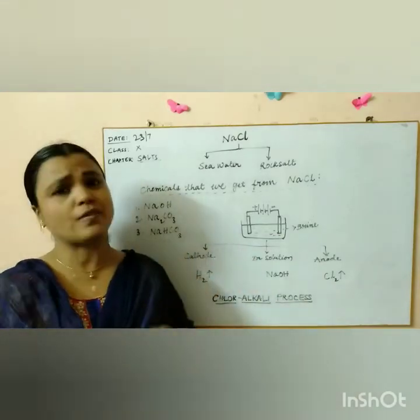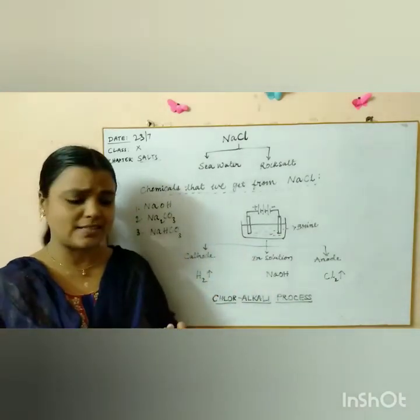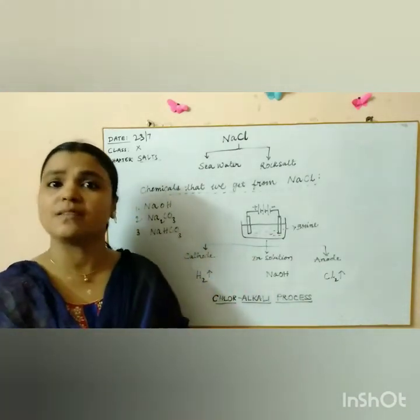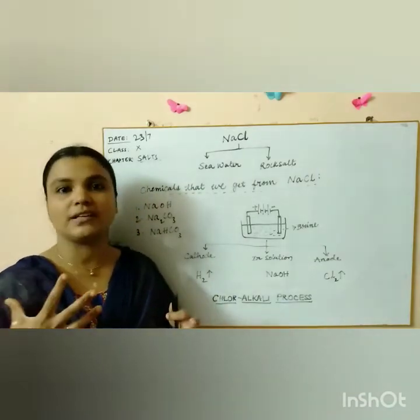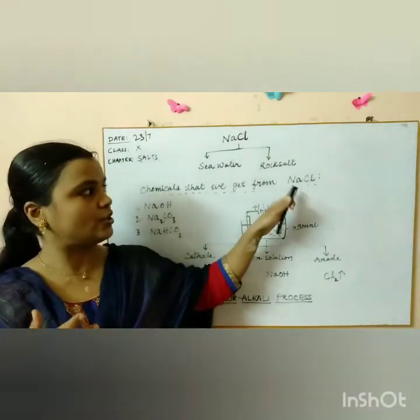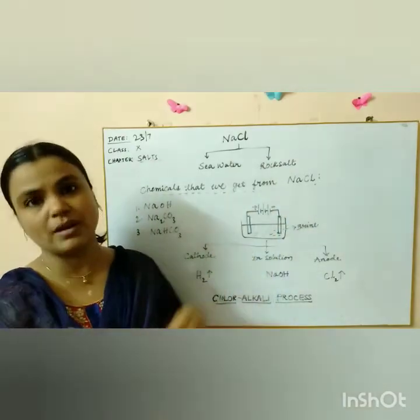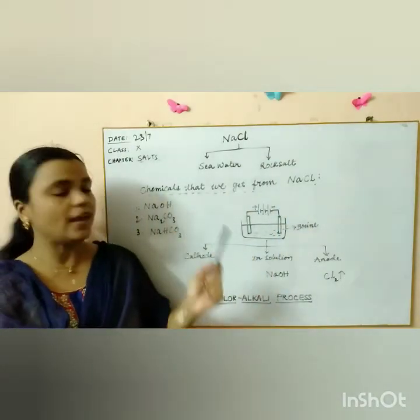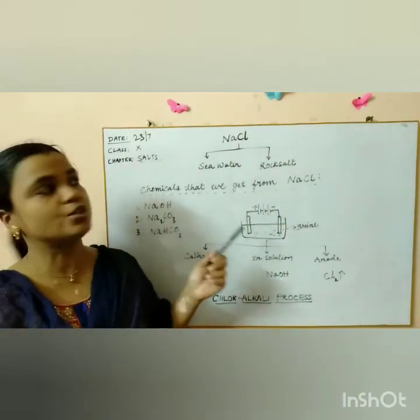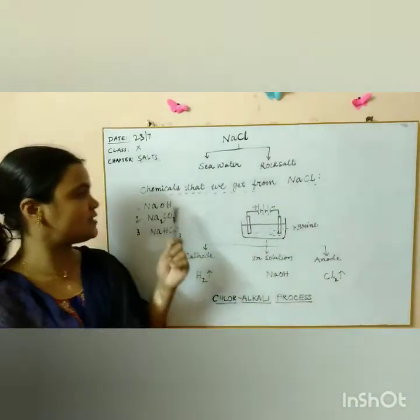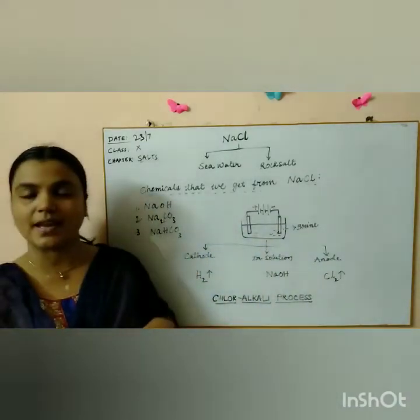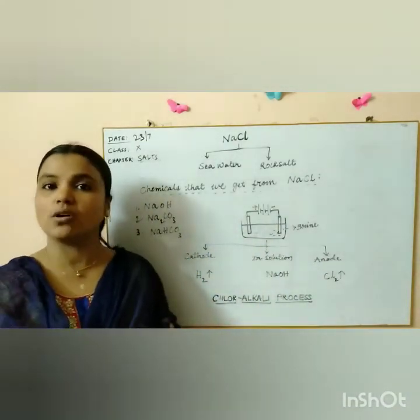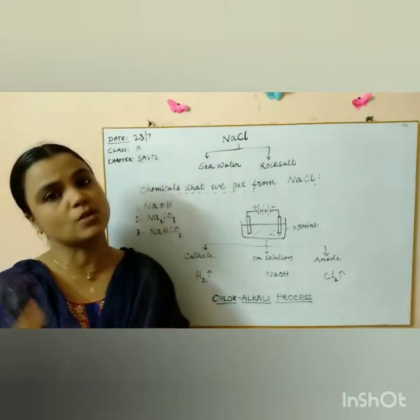It has got wide range of applications at industry level or even it is used as a preservative. It is a raw material for manufacturing or producing many chemicals. So we can see today one such chemical which can be produced from NaCl, which is nothing but sodium hydroxide. Sodium hydroxide is also called as caustic soda.